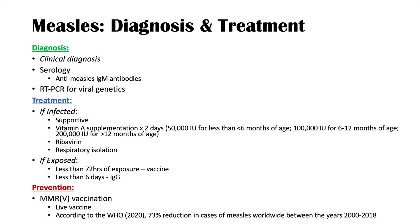To review: we diagnose measles clinically by history and physical examination, with serology testing for specific antibodies or PCR to check for viral genetics. For treatment, if the patient is infected, most of the time it's supportive measures to treat symptoms, plus vitamin A supplementation. In severe cases, ribavirin can be used to reduce the possibility of complications. If a patient is exposed but not infected, we can use the MMR or MMRV vaccination within 72 hours, or immunoglobulin G within about a week.